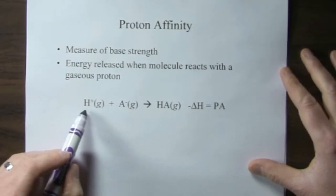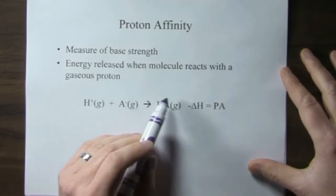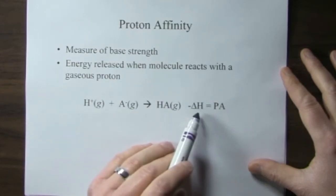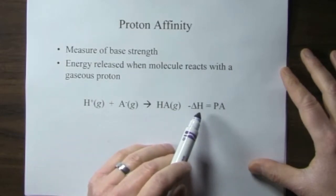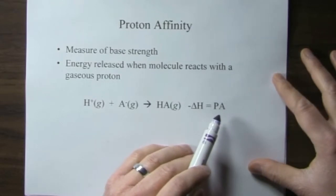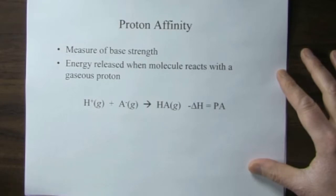So here's your gaseous base reacts with the gaseous proton to make the gaseous conjugate acid. And the enthalpy of that reaction, this is usually exothermic, so the proton affinity is defined as something that's a positive value, so it's the negative enthalpy of that.